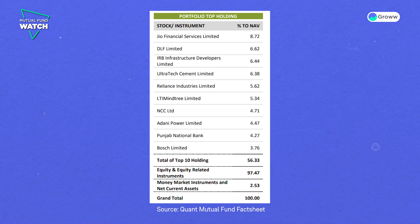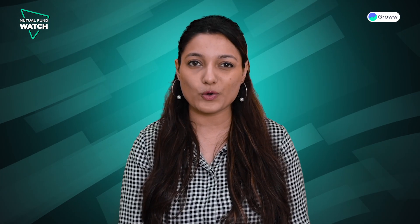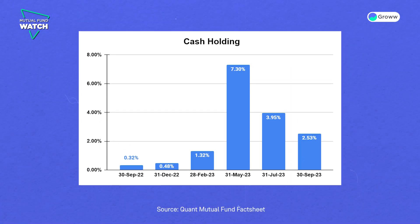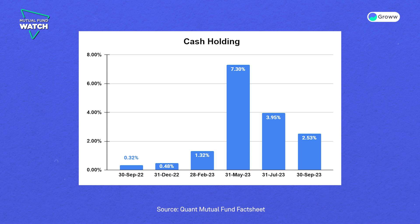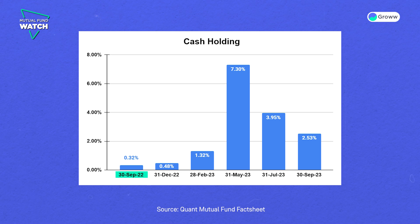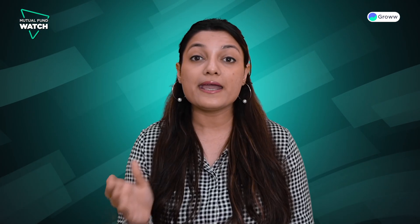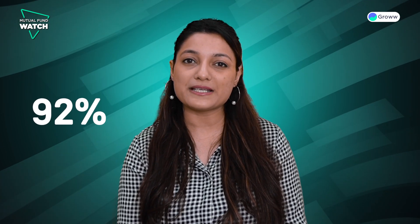The cash holdings change over a period of time. We can see in this graph how much the infrastructure fund's cash holdings have varied over the last 12 months. The latest cash holdings as of September 2023 are 2.53%. Overall, equity holdings have always been above 92%.